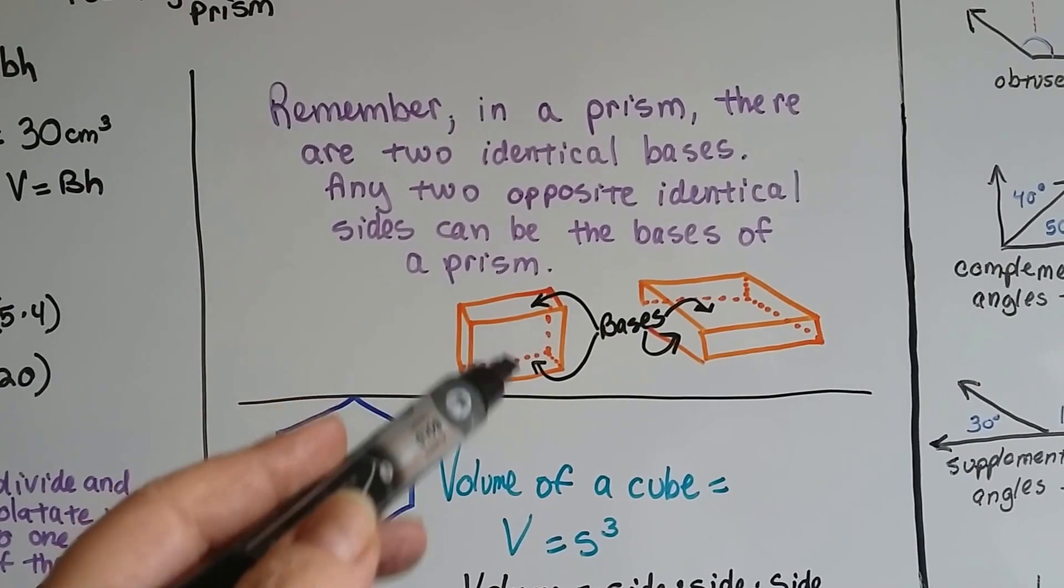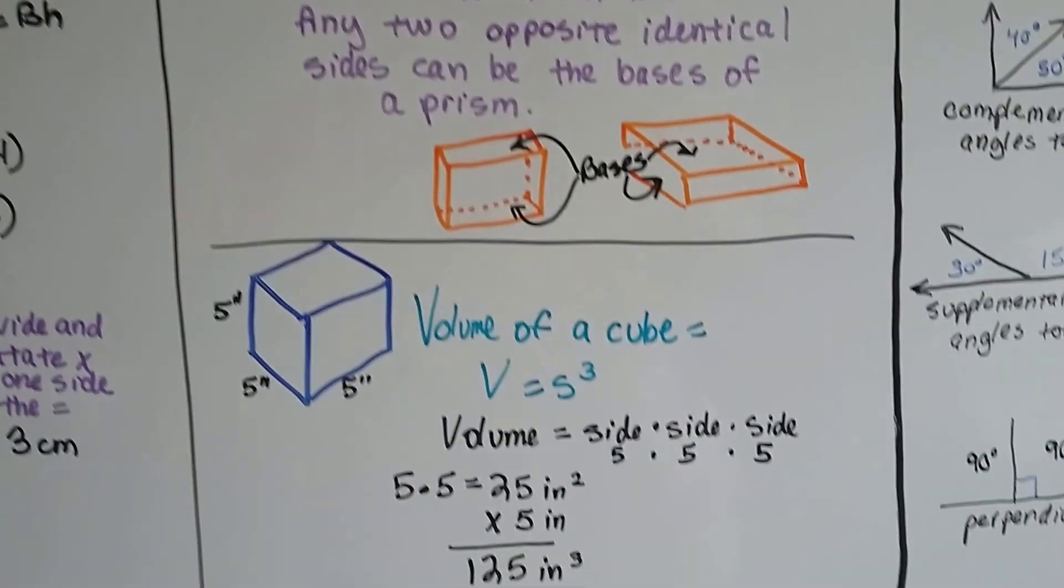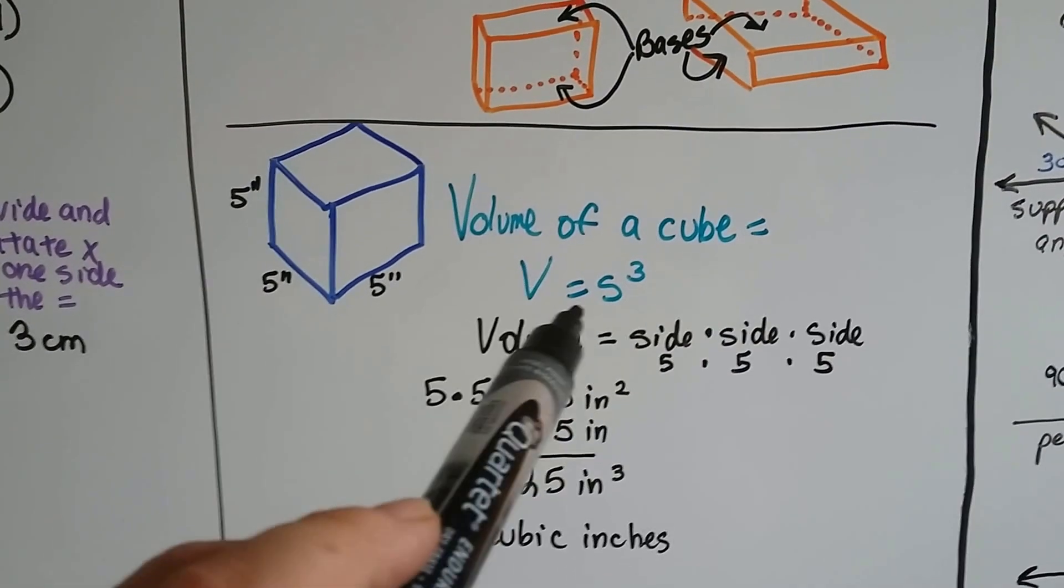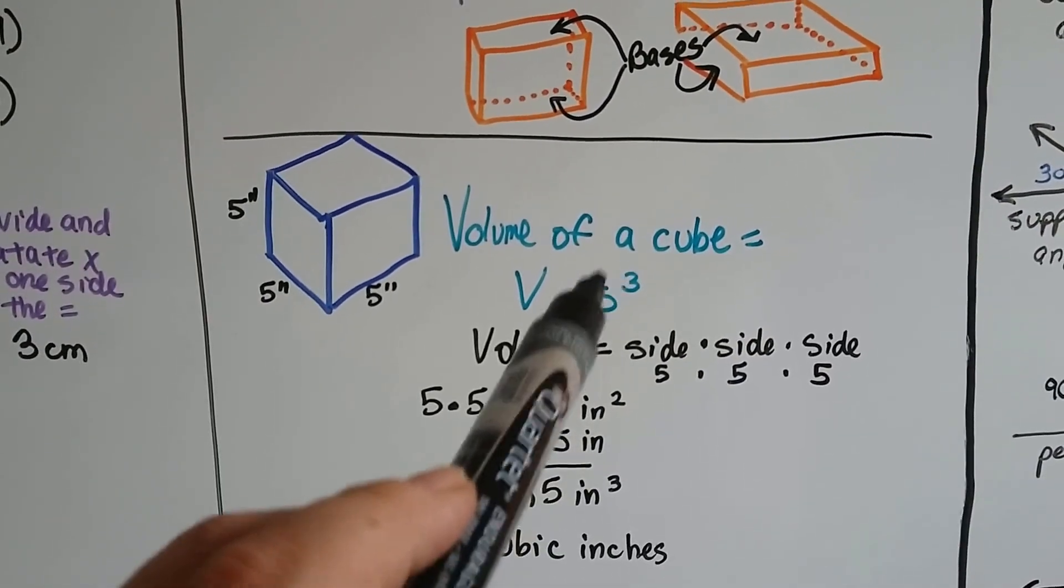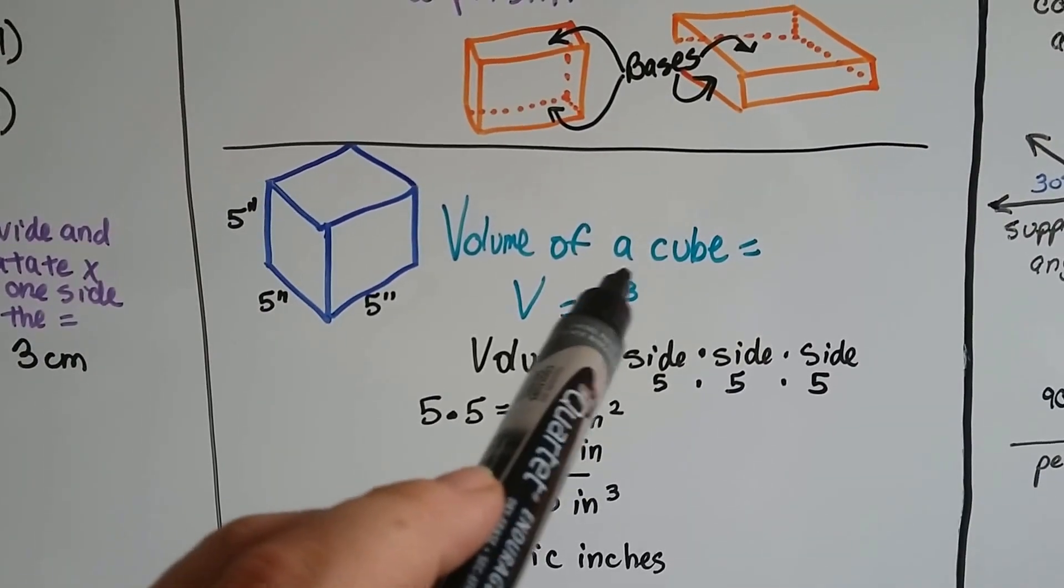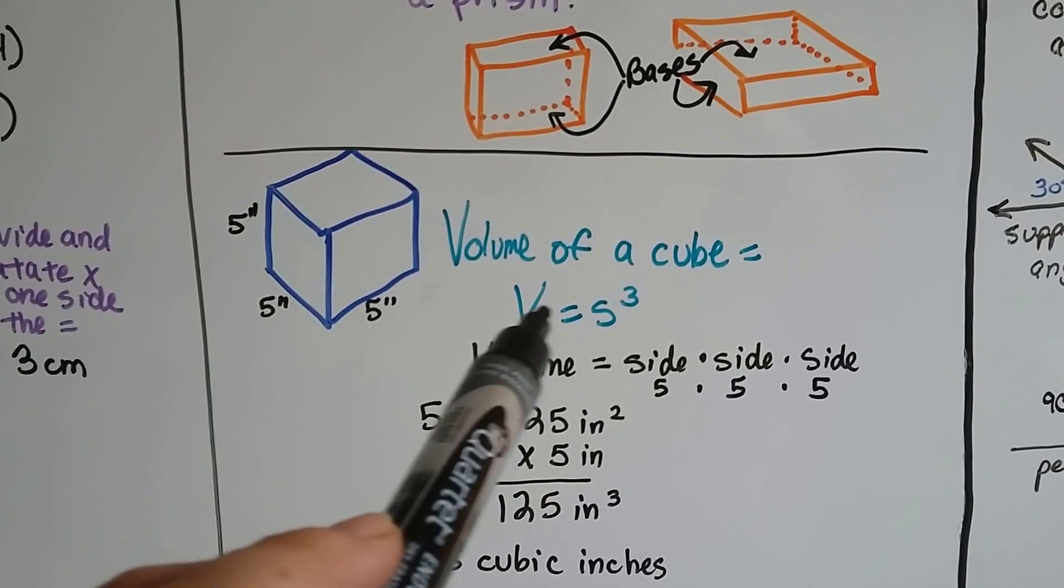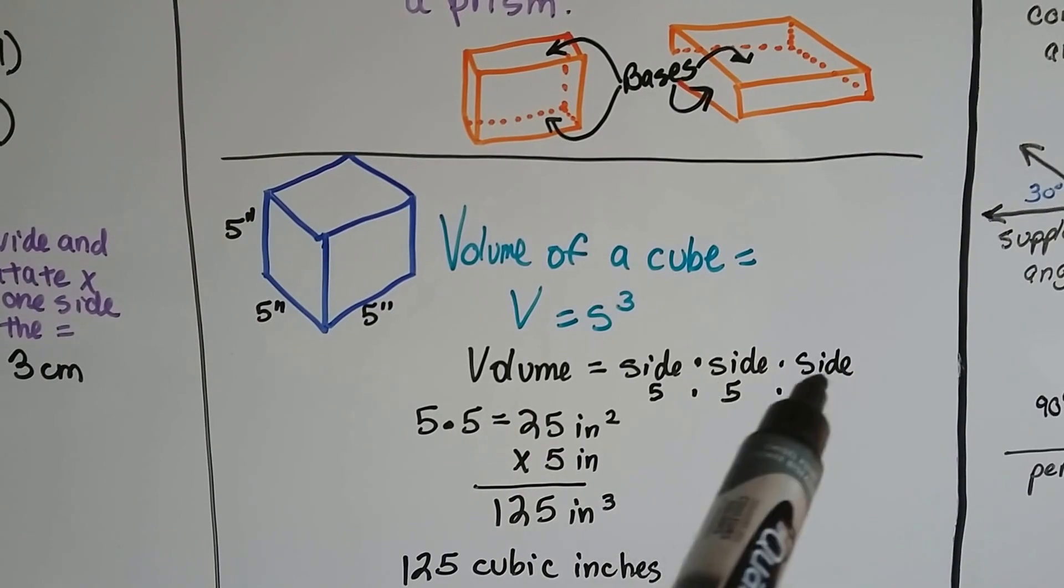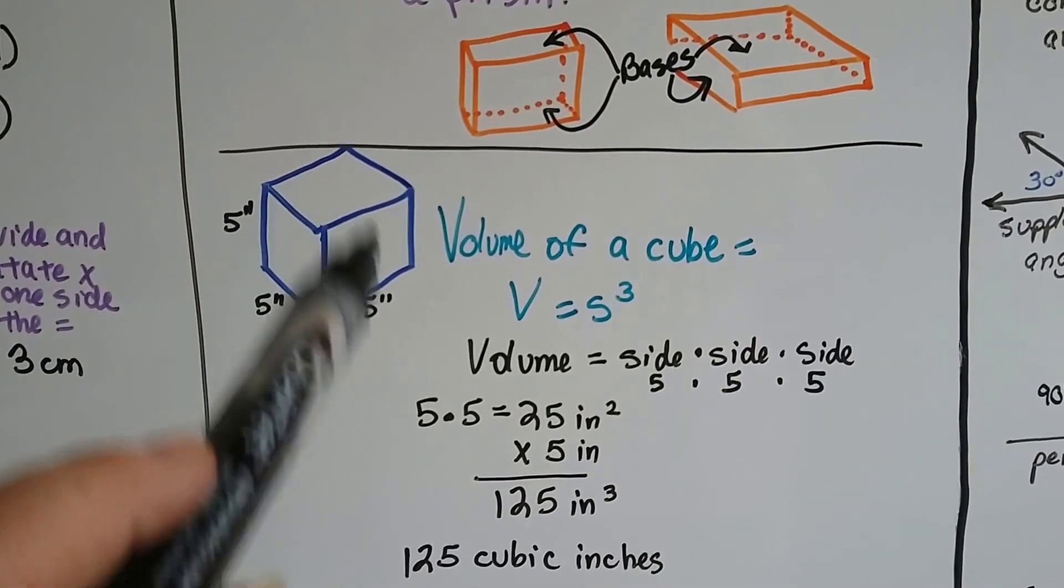Here's one last thing: for the volume of the cube we use s with the little 3 for the third power. It's s to the third power, and what that means is side times side times side, because it's a cube and it's all the same size all the way around.